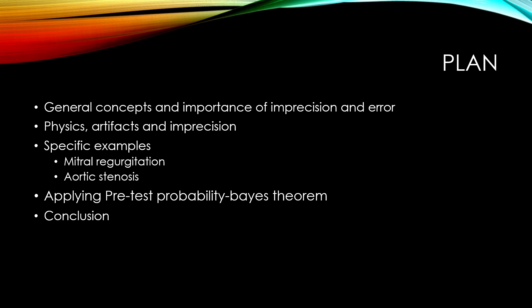For the plan of the presentation, I will start with general concepts and the importance of imprecision and error. We will then discuss the physics principles that may account for artifacts and imprecision, using specific examples from the echo lab such as mitral regurgitation and aortic stenosis. We will then discuss applying pretest probability and the Bayes theorem in the echo lab, and conclude afterwards.